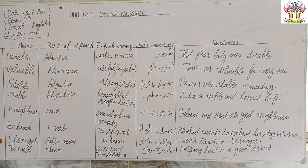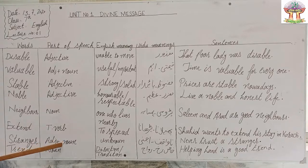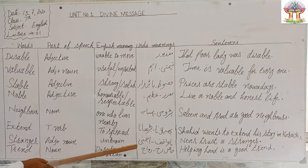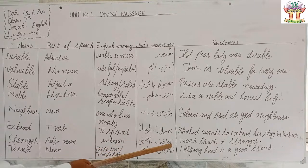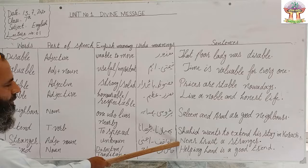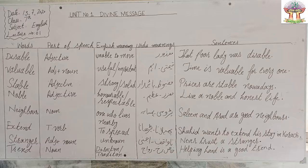Next word is 'stranger.' Parts of speech: adjective or noun. English meaning: unknown. Urdu meanings: navakif, ajnabi. Sentence: 'Never trust a stranger.'